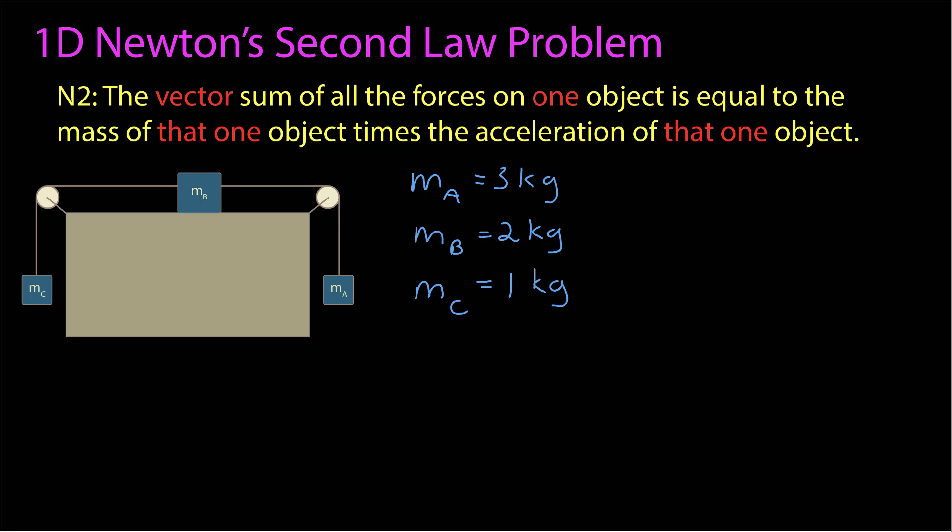In this problem we have three masses as shown in the figure. The surface is frictionless, the pulleys are massless, and we want to know the acceleration of mass b and the tensions in the wires. Since the pulleys are massless, the tension on either side of each pulley is the same. But the wires on either side of mass b will not have the same tension, so I've identified the wire on the right with tension 1 and the one on the left with tension 2.